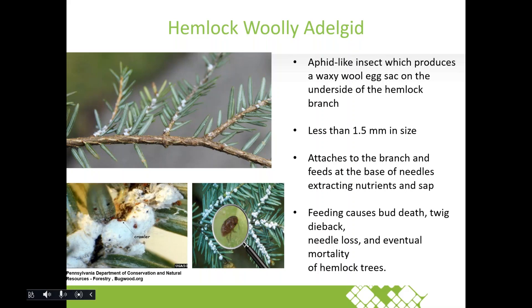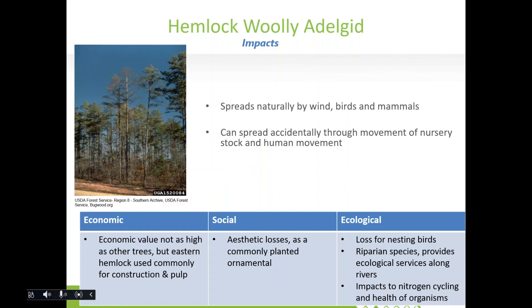This insect is native to East Asia and British Columbia; however, the eastern and western North American populations are genetically distant. In the west it feeds on western hemlock with almost no damage due to resistance in that species. In the east, it targets eastern and Carolina hemlock, which have no host resistance at all — making the impact here much greater. It can spread naturally by wind, birds, and mammals, but also accidentally through movement of nursery stock and human movement.